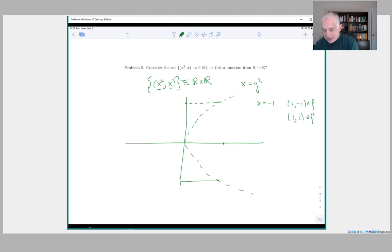one one in the function, because again, x squared is, this is of the form x squared x. Here x is one, x squared is also one. So you have two points in the function, which have the same value in the domain, but different values in the codomain.